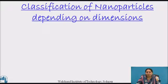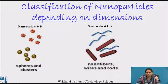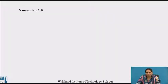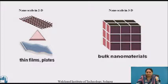Depending upon their dimensions, nanoparticles are divided as: 0-dimensional nanoscale — these are spheres or clusters, also called quantum dots; 1-dimensional nanoparticles — nanofibers, nanowires, or nanorods; 2-dimensional particles — thin metal plates; and 3-dimensional nanoparticles — bulk materials.